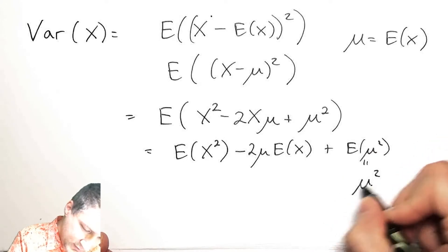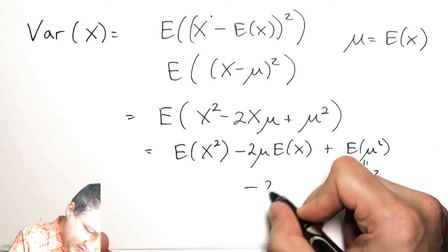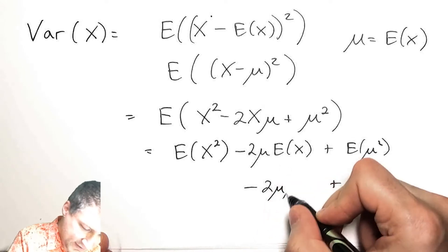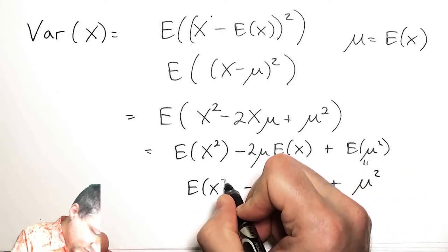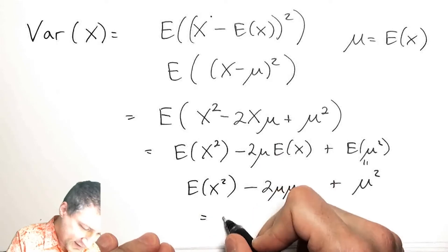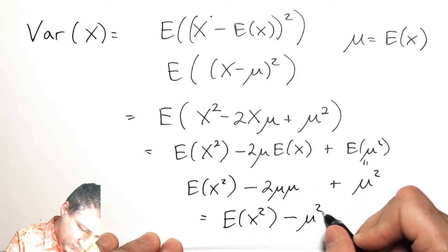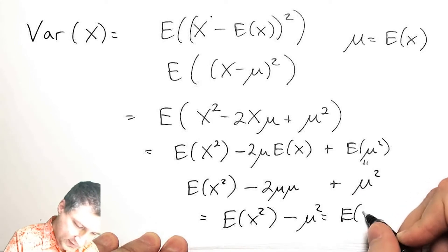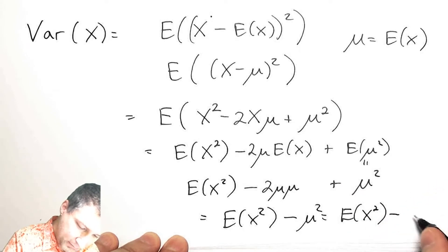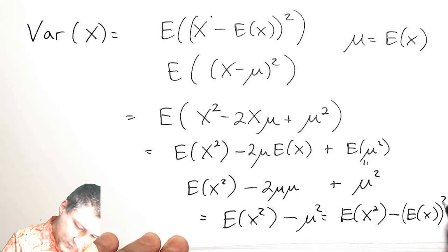I have 2*mu, E(X) is also mu, and then I have E(X squared). So what I see here is I actually have E(X squared) minus mu squared, or the expected value of X squared minus the expected value of X all squared.